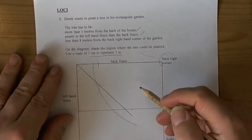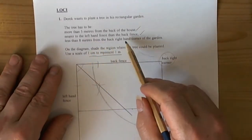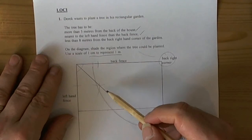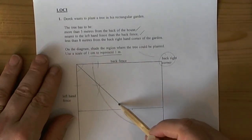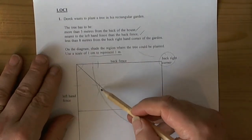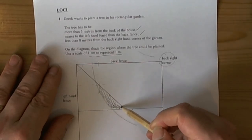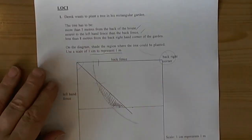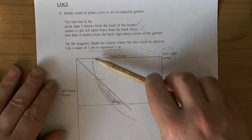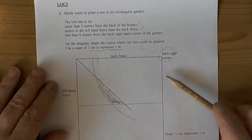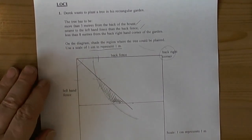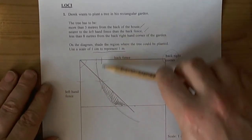That then allows us to decide where the region is. So it has to be less than eight metres from the back right hand corner. So it's going to be over here somewhere. It has to be nearer to the left hand side. Then it has to be there. So it says shade the region. So the region we're going to shade is here. And that would be four marks. Because we've shown all our construction lines. We've left our compass lines on the picture. And that's how loci questions can be done.